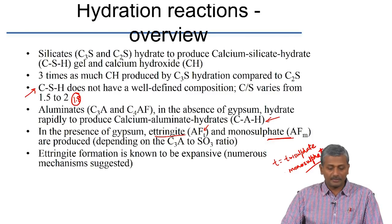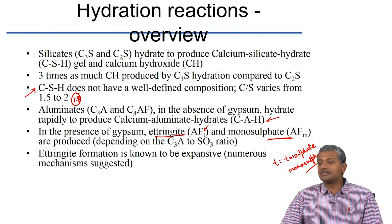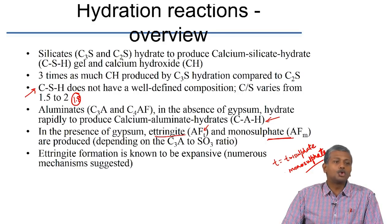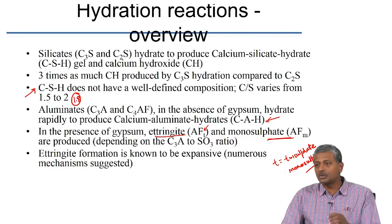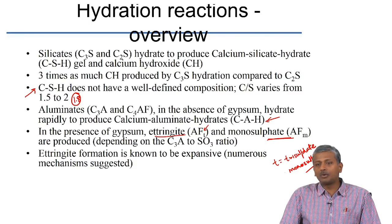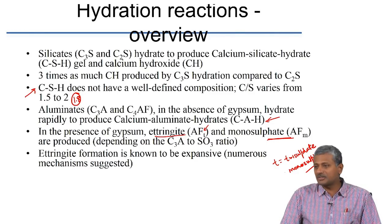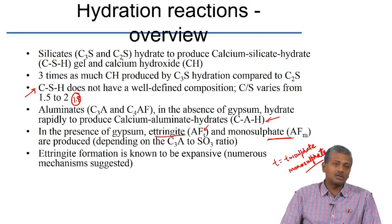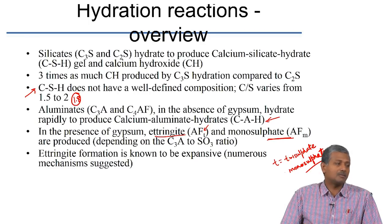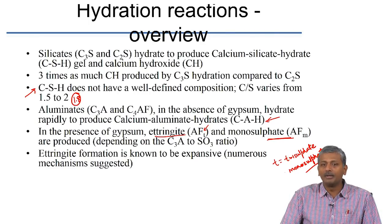Ettringite can later convert to monosulphate (AFM), where M is monosulphate. Ettringite formation is known to be expansive, but in fresh cement paste this does not cause problems because the paste is still plastic and moldable and can accommodate the expansion. Only when expansion happens in hardened concrete will it cause damage.